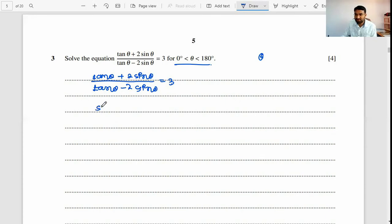sin θ upon cos θ plus 2 sin θ, upon again sin θ upon cos θ minus 2 sin θ is equal to 3. So here you have numerator sin θ and denominator cos θ, here also.